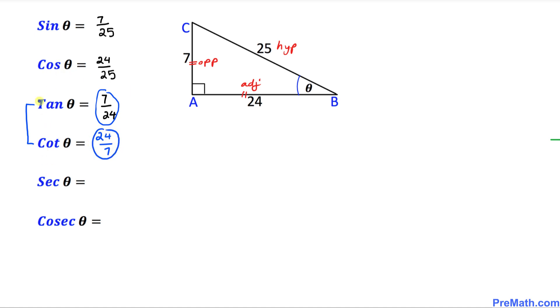And as far as secant is concerned, cosine and secant are related to each other. They are reciprocal to each other. So whatever we got for cosine theta, we just take the reciprocal or just flip it over. So this is going to become 25 over 24, and that is our answer.